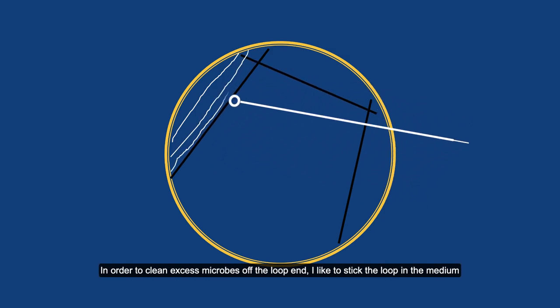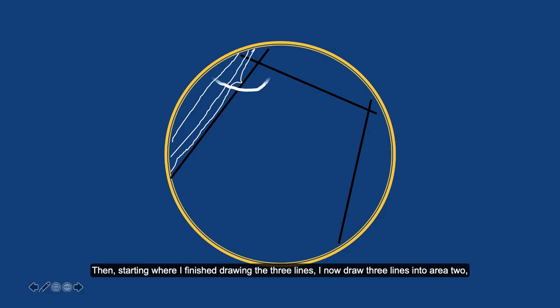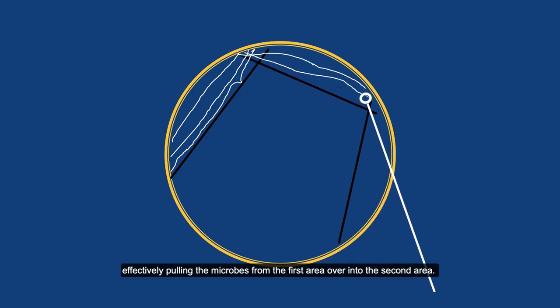In order to clean excess microbes off the loop end, I like to stick the loop in the medium in an area where I have not put any microbes yet, and I do that after every streak. Then, starting where I finished drawing the three lines, I now draw three lines into area two, effectively pulling the microbes from the first area over into the second area.